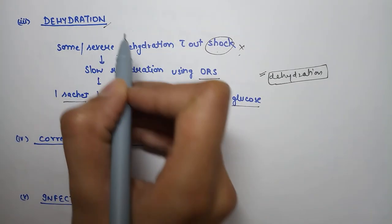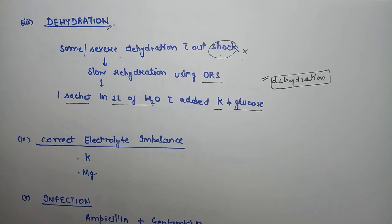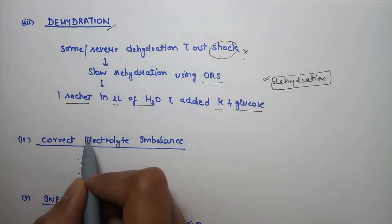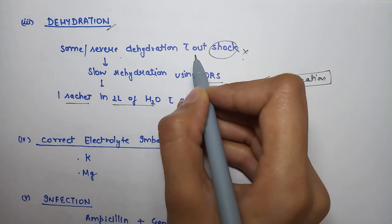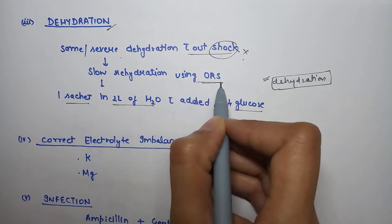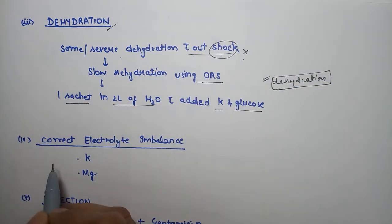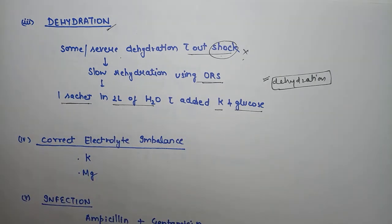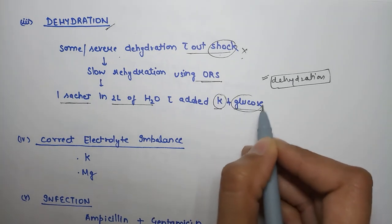For dehydration, assess signs like loss of skin elasticity, loss of turgor, decreased urine output, and absent tears. If severe dehydration without shock, give ORS. Normally we give 1 sachet in 1 liter water, but here give 1 sachet in 2 liters of water. Additionally, add potassium and glucose.